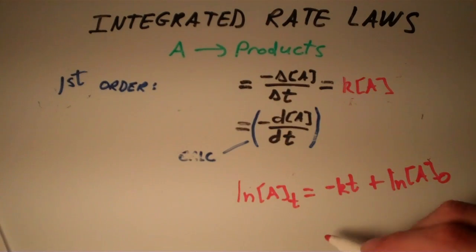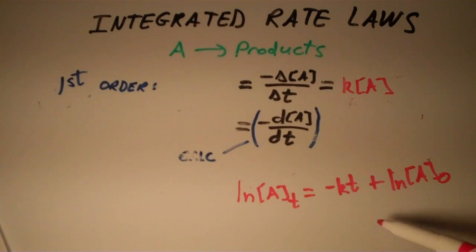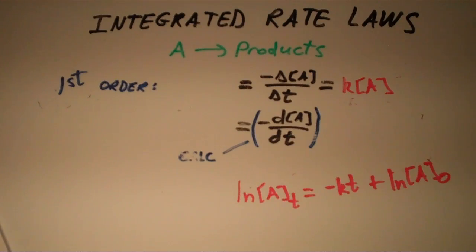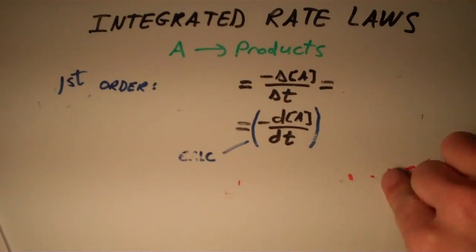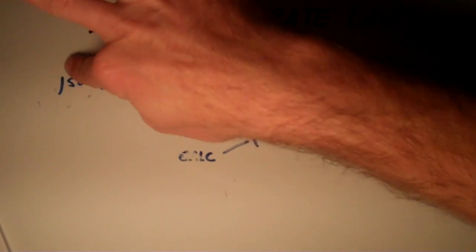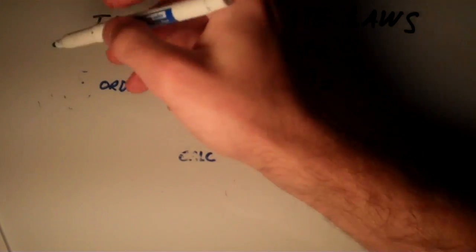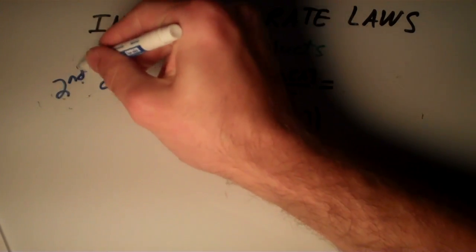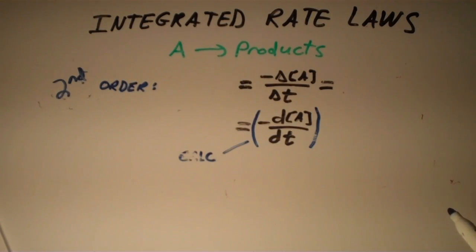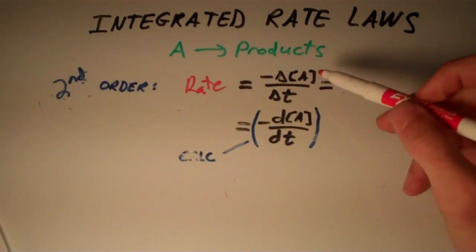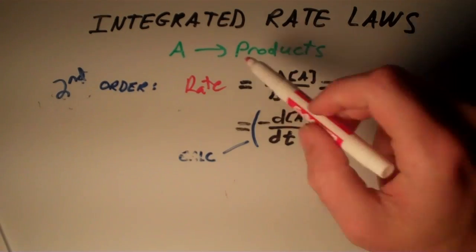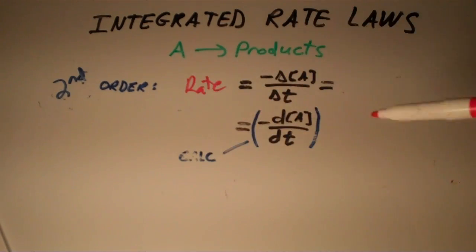Just a heads up on the different kinds of problems associated with integrated rate laws — you can end up solving for four different things. That just about does it for a first order integrated rate law. Now let's move on to a second order integrated rate law. The rate is equal to these two things — that never changes as long as you have this type of reaction where A decomposes into products.